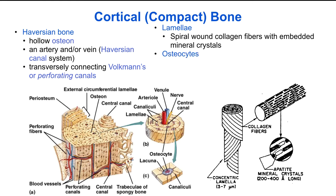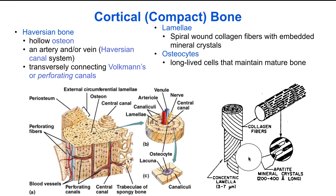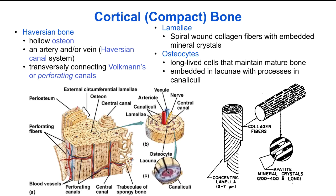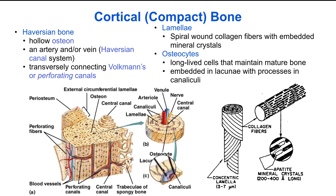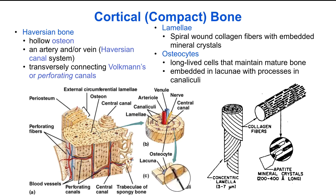There are also osteocytes — bone cells. They are the long-lived cells that maintain mature bone, and they are embedded in voids in the bone called lacunae, with their cell processes emanating out from the cell body in structures called canaliculi.